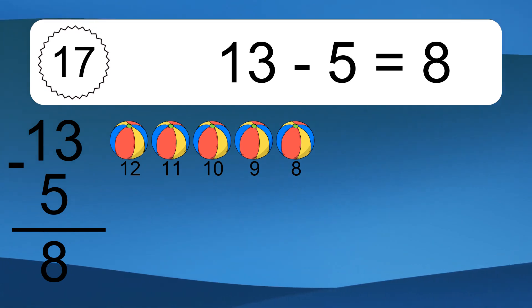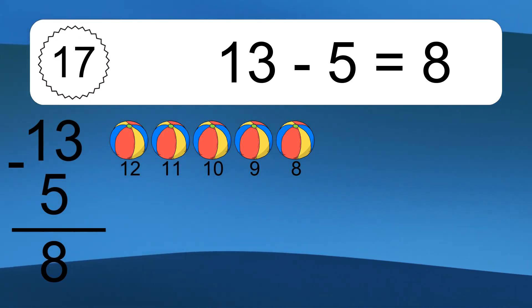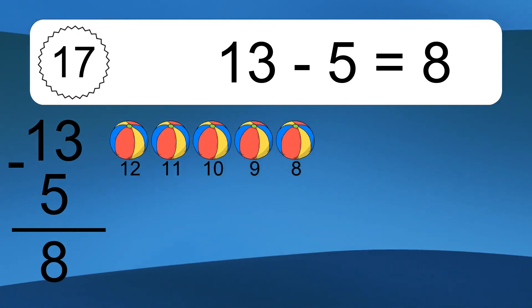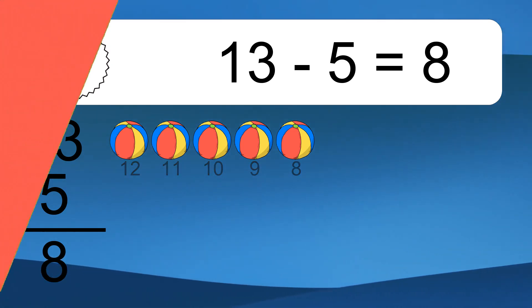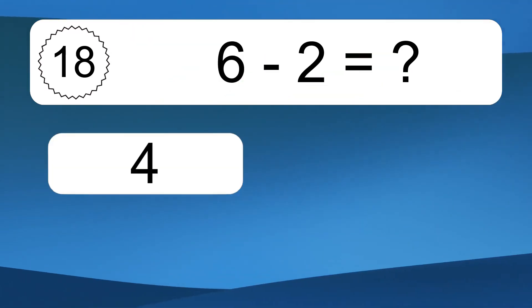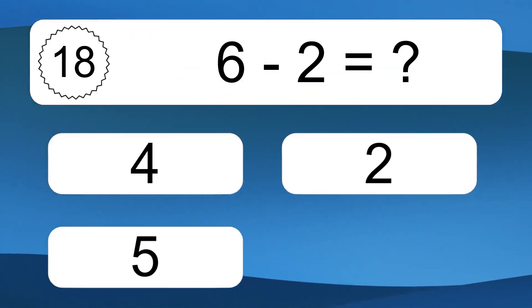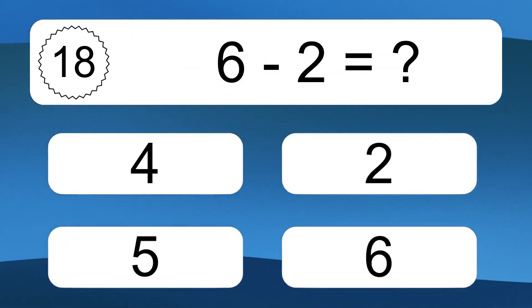13 minus 5 equals what? 13 minus 5 equals 8. Let's count it. 12, 11, 10, 9, 8.